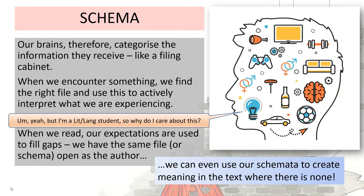To summarize that information: a schema is a way that we categorize information that we receive. You often get the metaphor of a filing cabinet or filing system used for this. So we encounter something new, we find our right file, we try to fit it into the right box, and if it fits, brilliant — we interpret it that way. But if it doesn't fit, then maybe we update our file, we update our information on that particular topic.